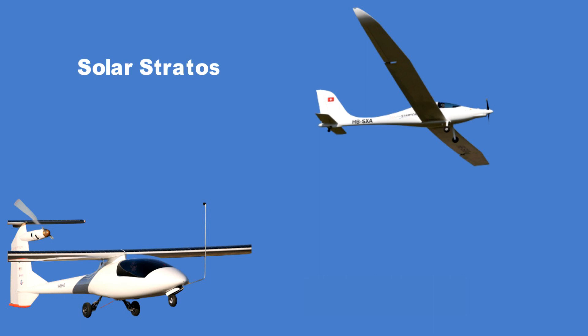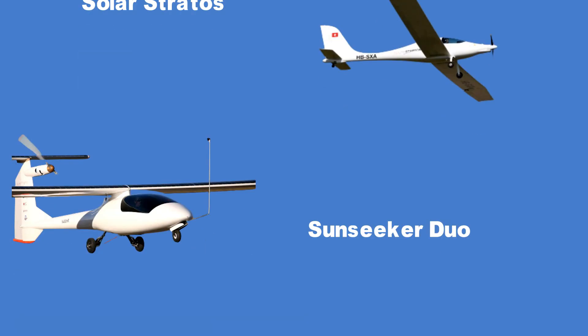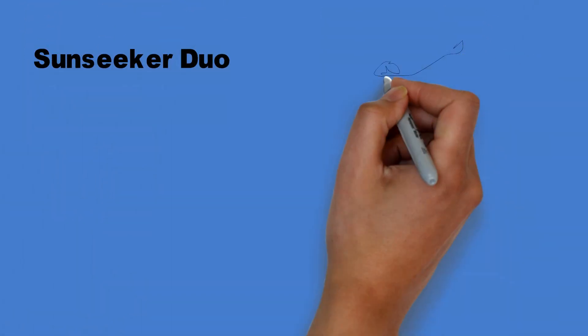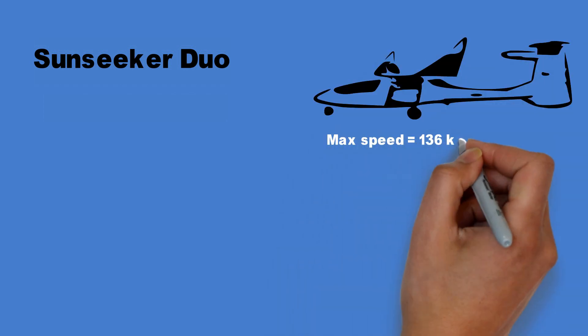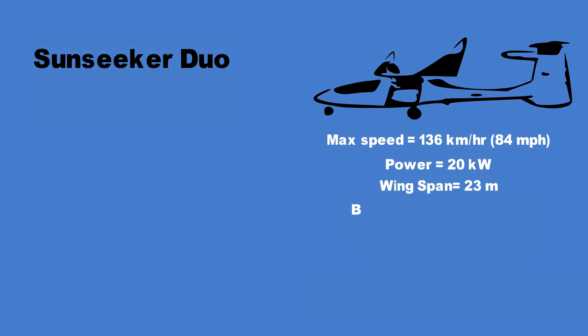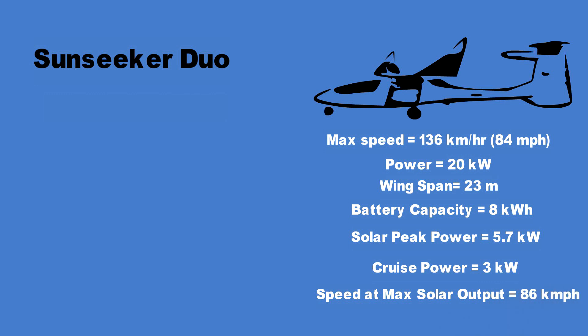Compared to the solar impulse 2 they are much more compact and can also go the distance. The sunseeker duo can achieve speeds of 136 kilometers per hour or 84 miles per hour with a 20 kilowatt motor. It has a 23 meter wingspan with an empty weight of 280 kg and a 8 kilowatt hour battery pack. A total of 25 square meter area is covered by 22.8 percent efficiency solar cells giving it a peak power capacity of 5.7 kilowatts. During its cruise when the speed is 72 kilometers per hour or 45 miles per hour the sunseeker duo consumes just 3 kilowatts. At the maximum photovoltaic output it can reach up to 86 kilometers per hour. This gives the sunseeker a minimum of 6 to 8 hours of flight time on a sunny day even in mid-latitudes.